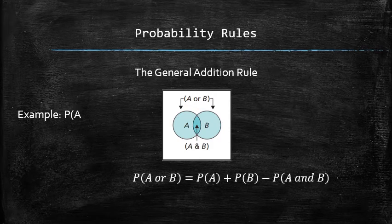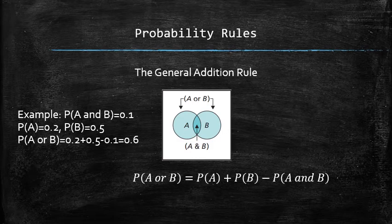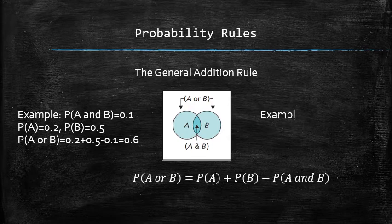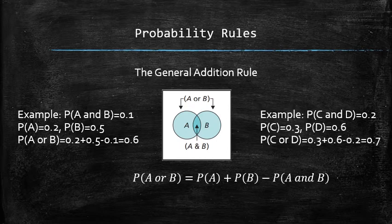For example, if P(A ∩ B) = 0.1, P(A) = 0.2, and P(B) = 0.5, then P(A ∪ B) = 0.2 + 0.5 − 0.1 = 0.6. Another example: if P(C ∩ D) = 0.2, P(C) = 0.3, and P(D) = 0.6, then P(C ∪ D) = 0.3 + 0.6 − 0.2 = 0.7.